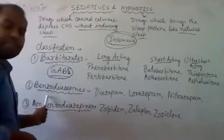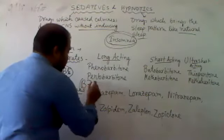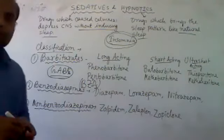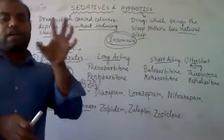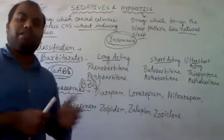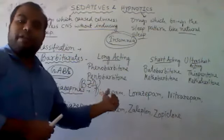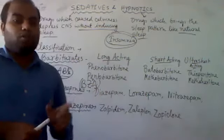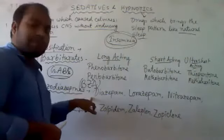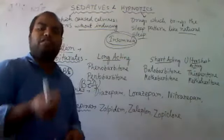The next class is benzodiazepines. The benzodiazepine ring consists of a six-membered benzene ring fused with a seven-membered diazepine ring containing two nitrogen atoms at positions 1 and 4. Key drugs in this class include diazepam, clonazepam, and others derived from the diazepam structure.